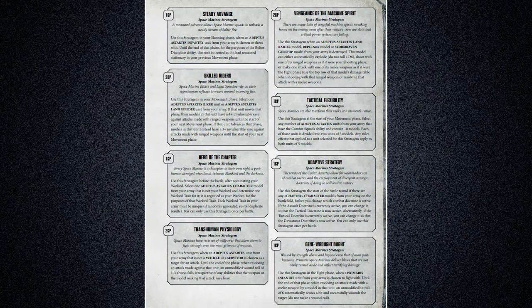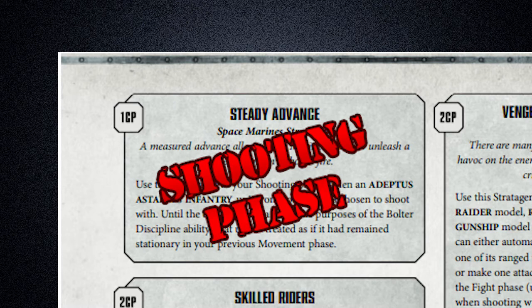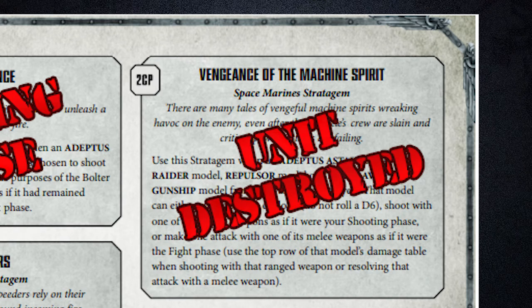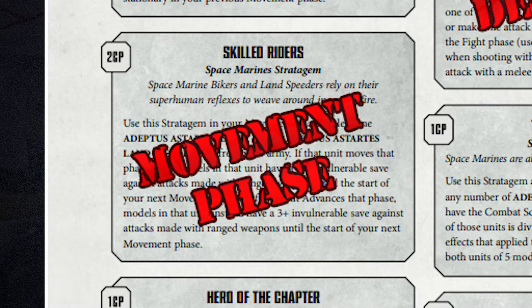For example, let's take a look at a page of stratagems from the 2019 Space Marine Codex. Steady Advance — used in the shooting phase. This is the last page of stratagems, and the shooting phase is only phase three of the six in a battle round. Seems weird. Vengeance of the Machine Spirit — used when a unit is destroyed. So we have left the phases and are dealing with stratagems proc'd by specific events. Skilled Riders — used in the movement phase. And we're going back to the phases — back to a phase which occurs before the shooting phase.